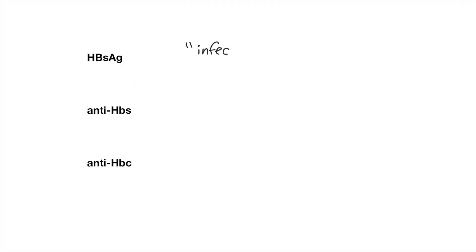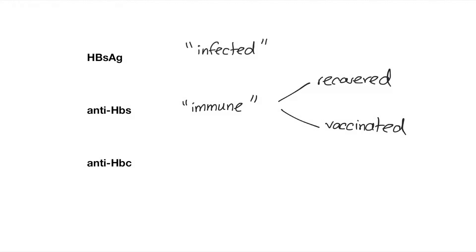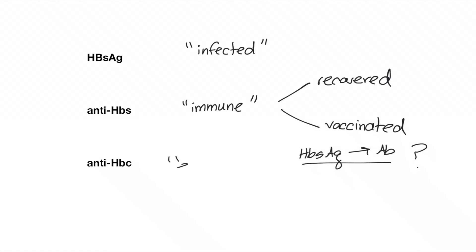To summarize: the surface antigen, when present, indicates that the person is currently infected — there is no other exception to this. The surface antibody indicates that the person is immune, and this can mean either that the person has recovered from an infection or that they have been vaccinated, since the vaccine injects a small amount of surface antigen so the body mounts an immune response in the form of surface antibodies. The core antibody comes into play to differentiate these two, because the vaccine does not contain core antigens — only the virus itself in the body will produce core antibodies.